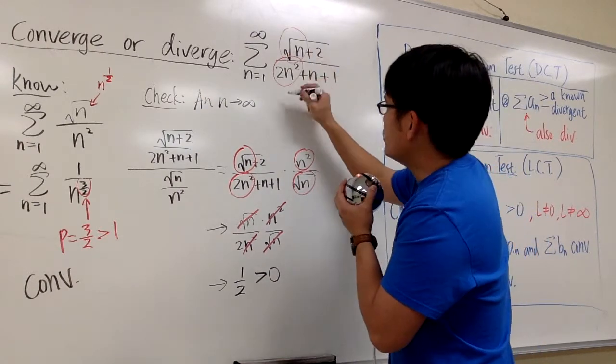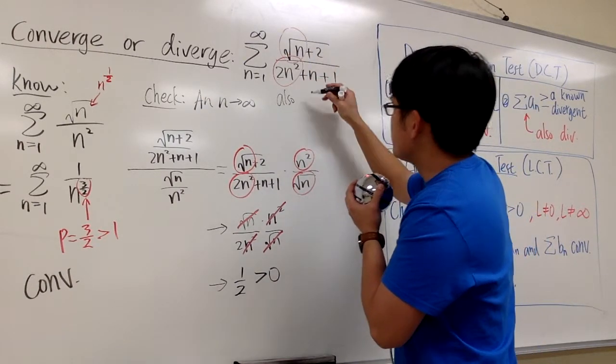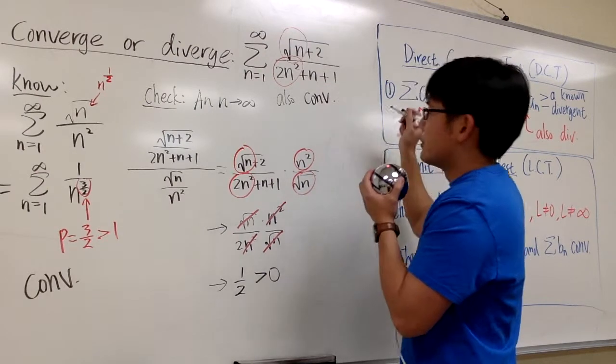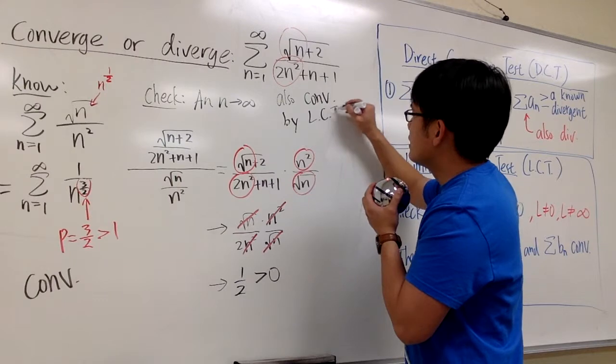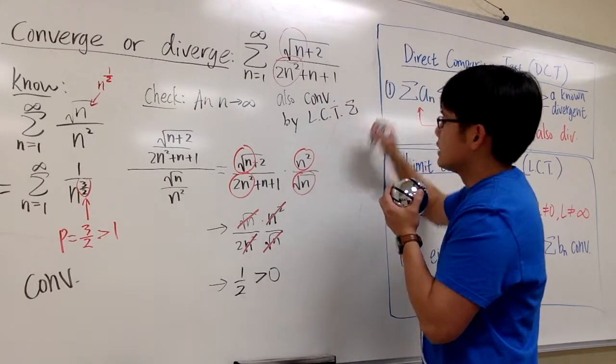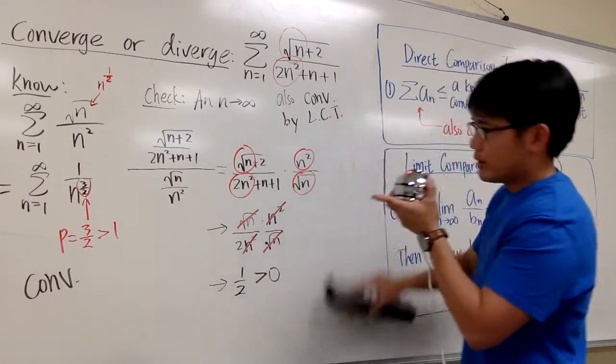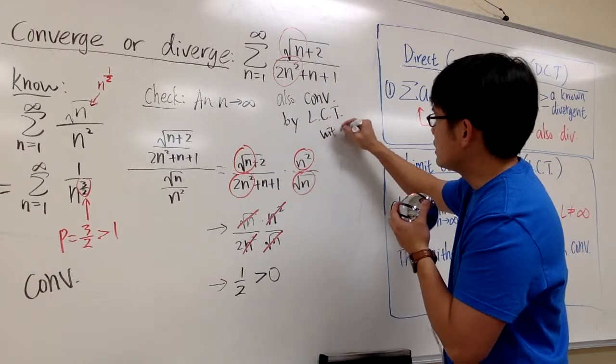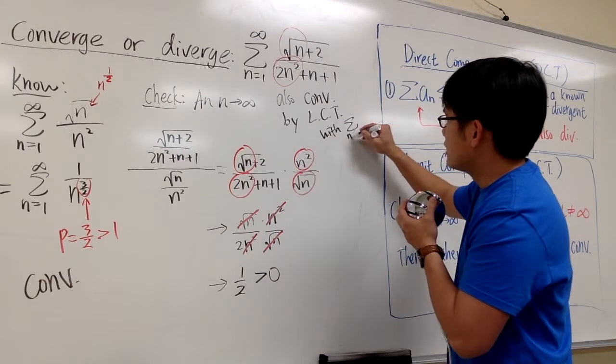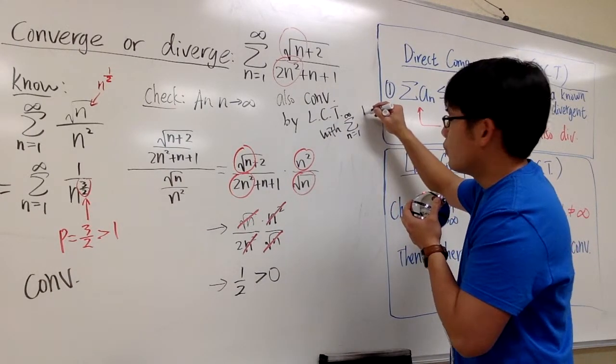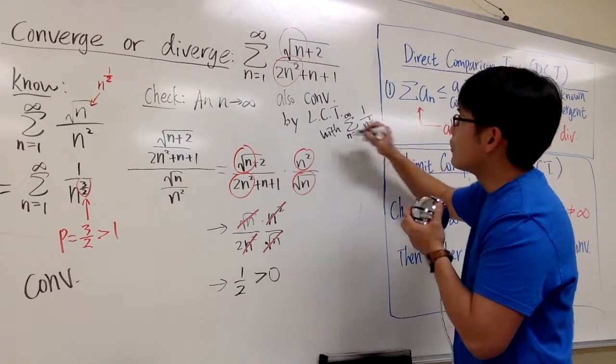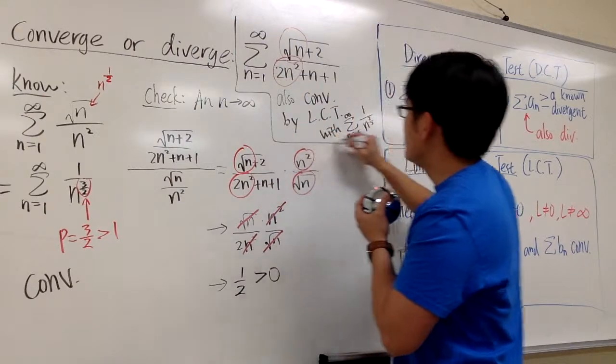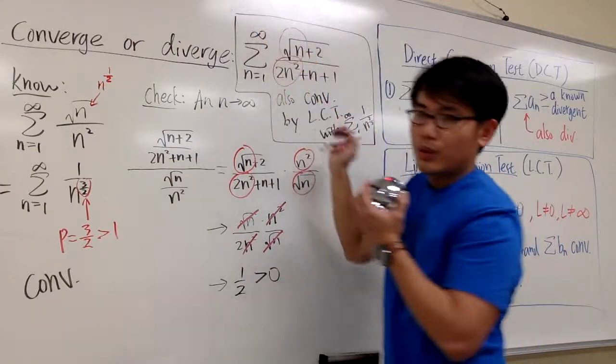So we will say, the original also converges by limit comparison test with sigma as n goes from 1 to infinity, 1 over n to the 3 over 2 power. And this right here is the conclusion that we want to make. That's all.